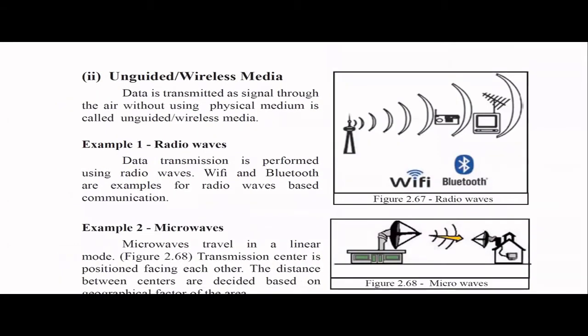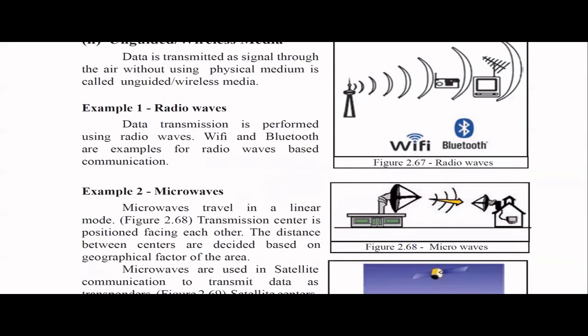Unguided or wireless media means data is transmitted as a signal without any physical medium you can see. One type is radio waves — there are no wires to transmit radio data; the transmission is performed using radio waves. Examples include Wi-Fi and Bluetooth, which both use radio waves.